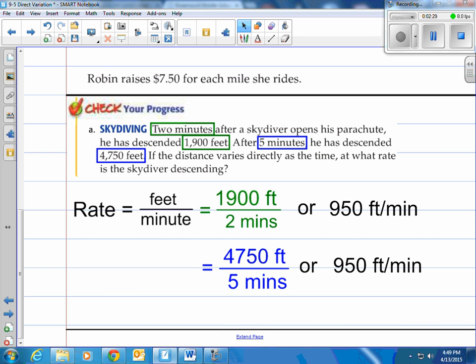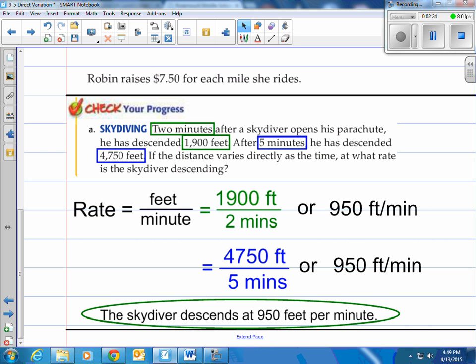So that constant of variation is 950 feet per minute. So the skydiver descends at 950 feet per minute.